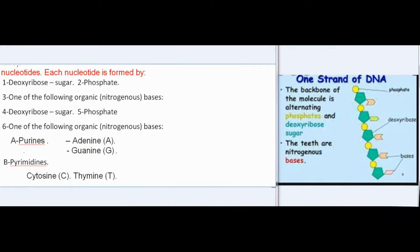Each nucleotide is formed by deoxyribose sugar, phosphate, and one of the following organic nitrogenous bases — purines: adenine (A) and guanine (G); and pyrimidines: cytosine (C) and thymine (T). The strands of DNA are arranged so that both are bound by specific pairs of bases: adenine of one strand binds specifically with thymine of the opposite strand, and cytosine of one strand binds with guanine of the other strand.